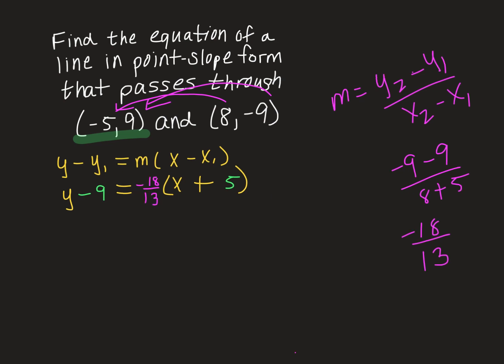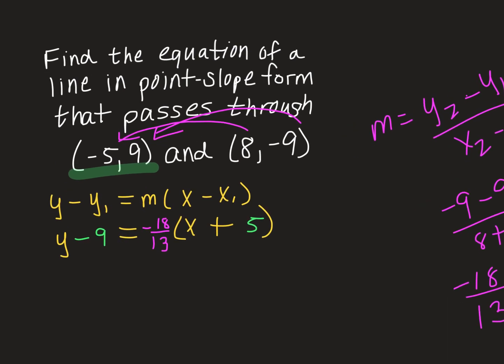And there you have it, friends. There's the equation of the line that passes through those coordinates in point slope form. And again, just for the record, I could have used this coordinate for my y one and my x one. I just chose to use the first one that popped up.